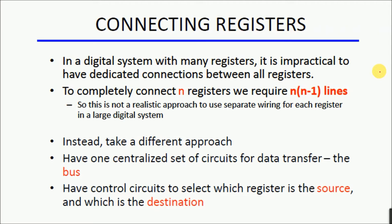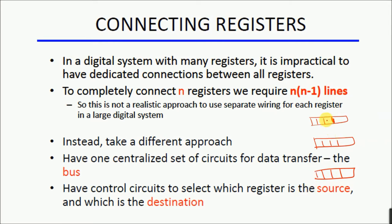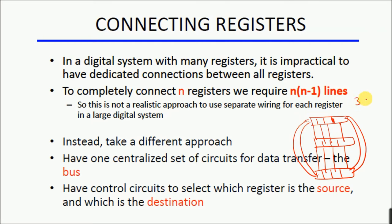For example, let's say we have three 4-bit registers. Connecting these two together, then these two together, and then these two together — so each register is connected with every other one. We have three registers, each of 4 bits. How many lines are required to connect these three 4-bit registers together? 12 lines are required.